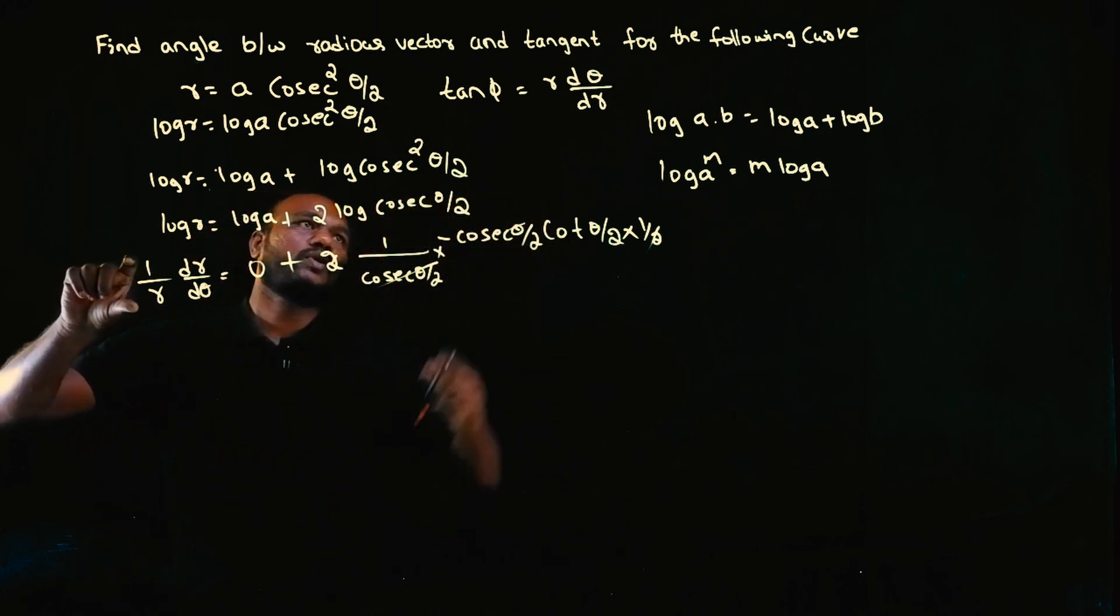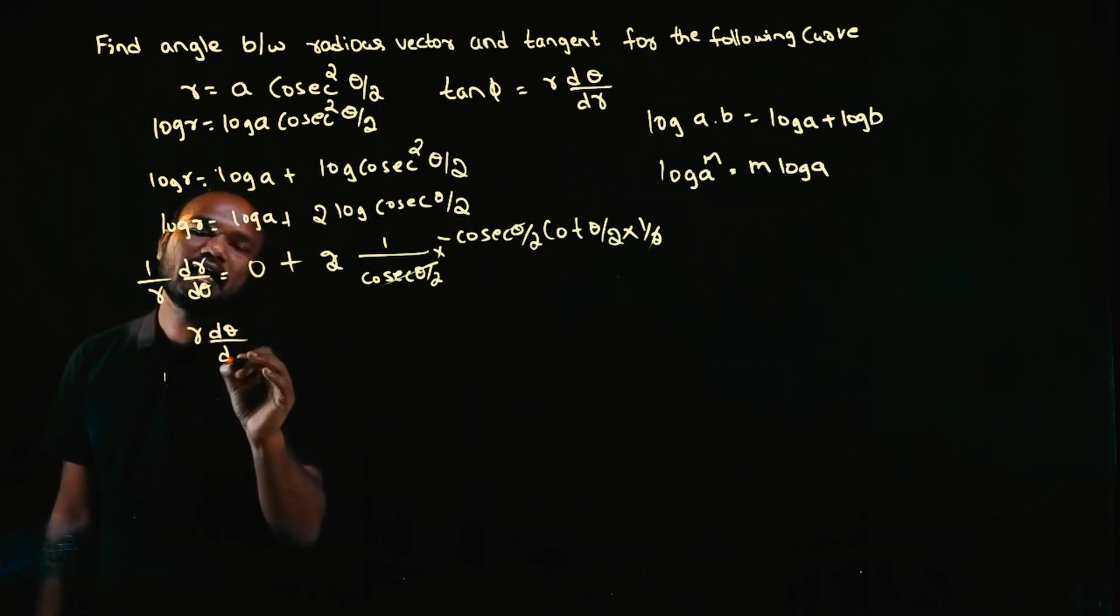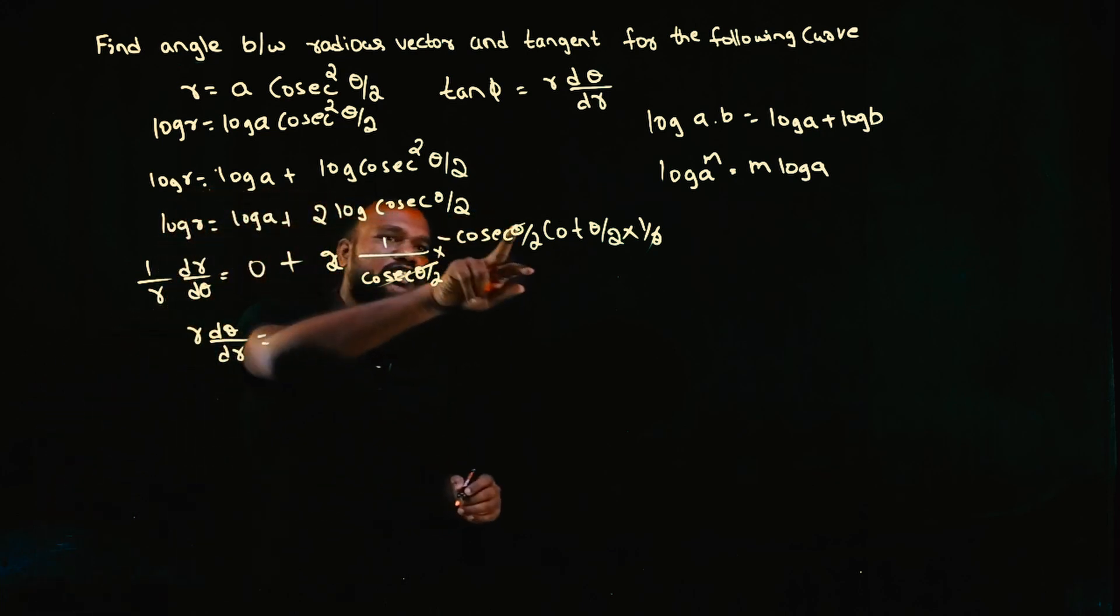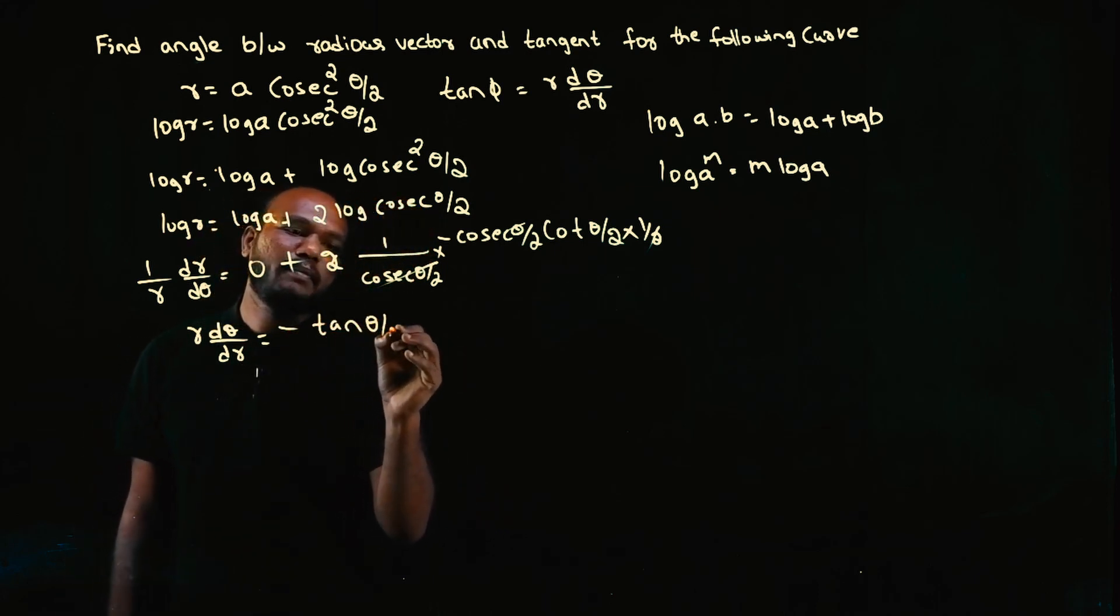So I don't want dr on the bottom, I want r. So I will just reciprocate. r·(dθ/dr) equals the reciprocal of cot, which becomes tan. So -tan(θ/2).